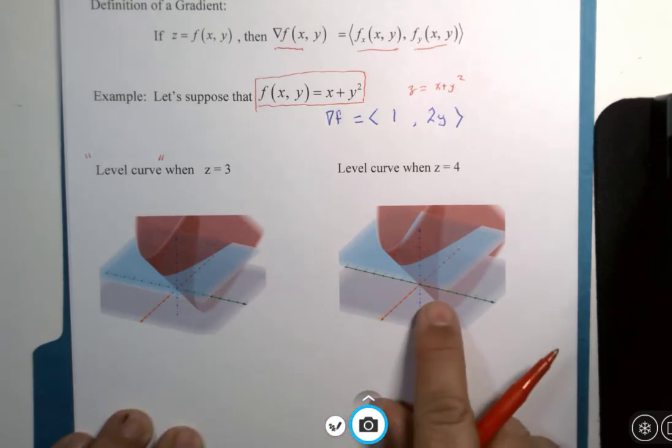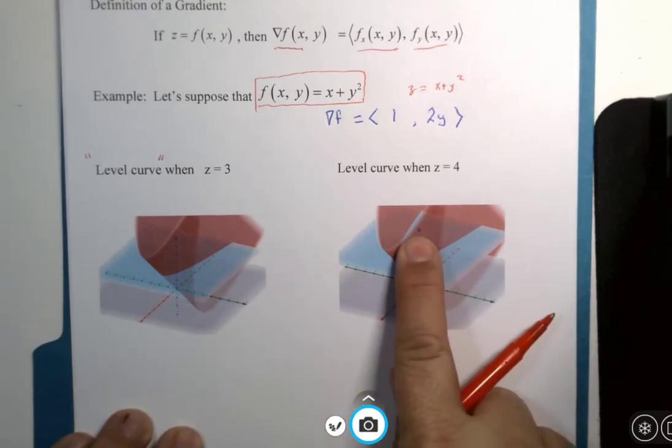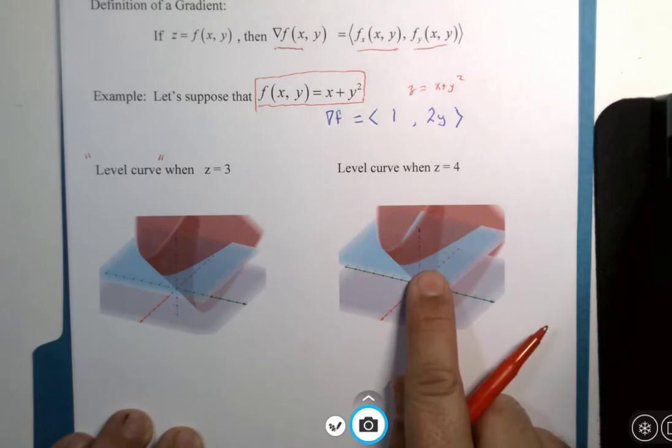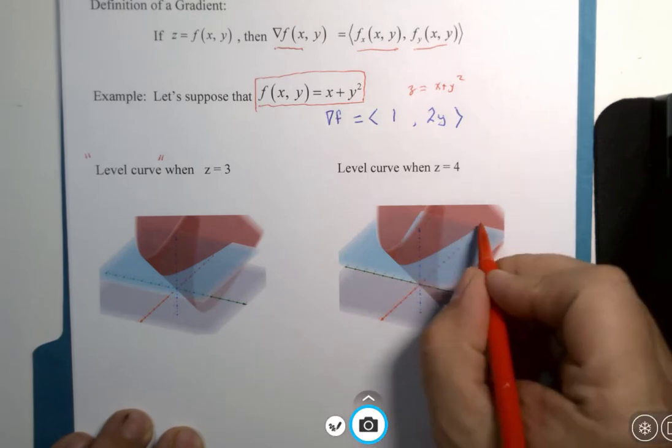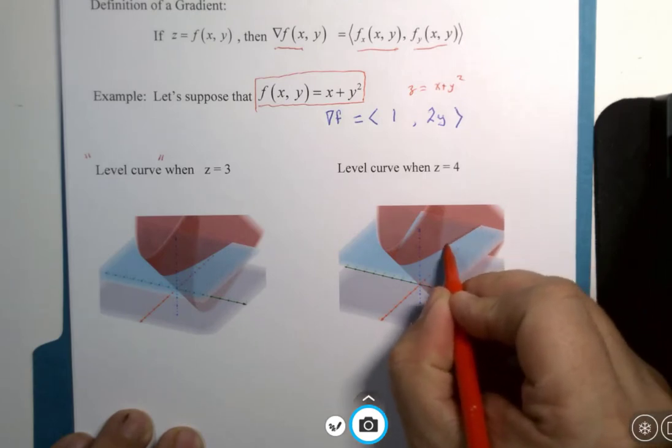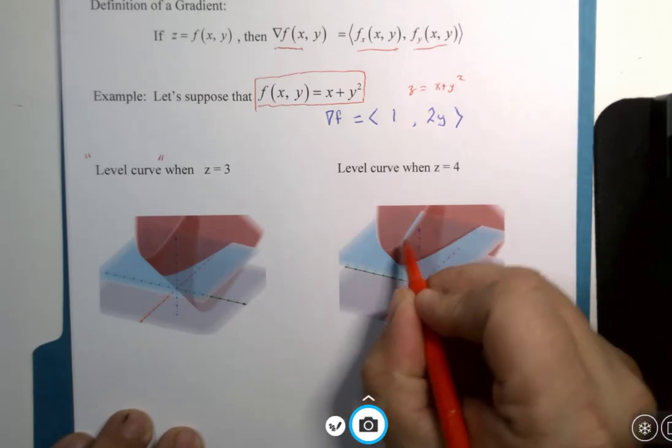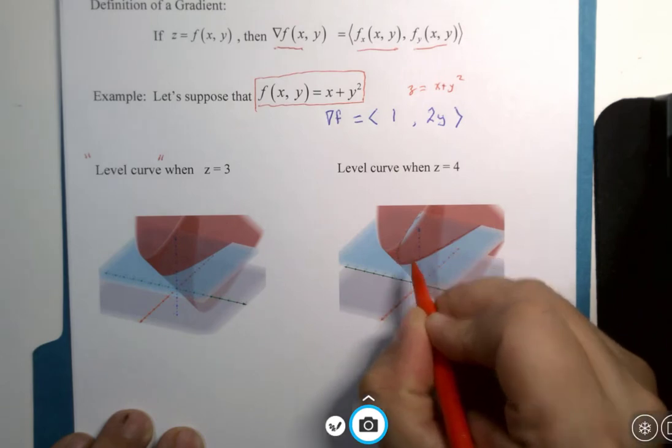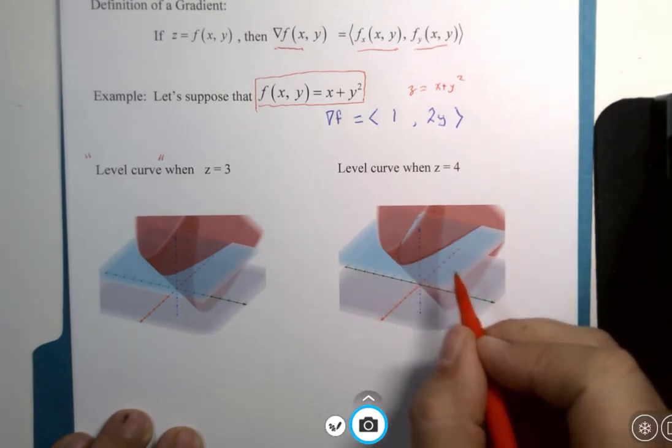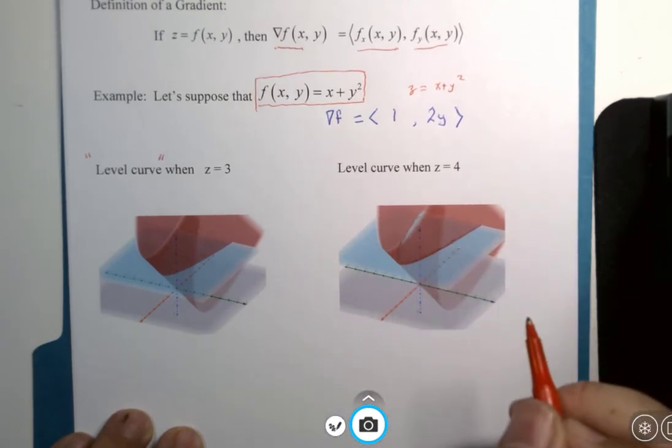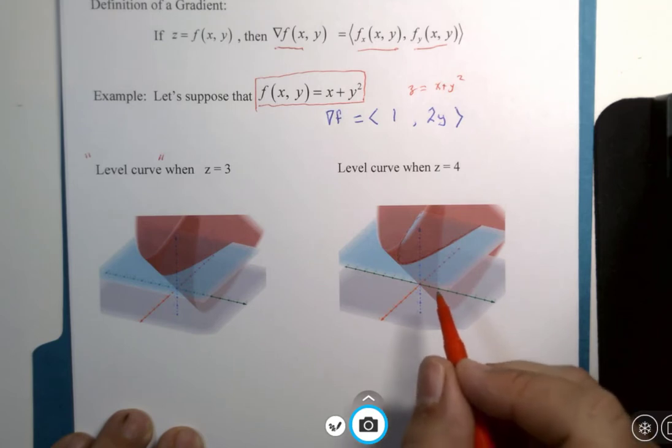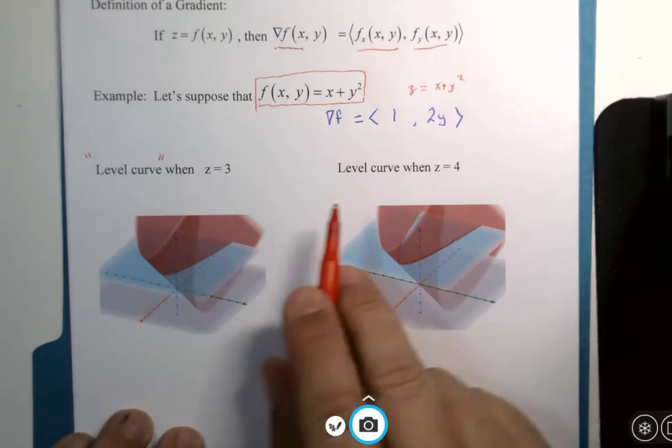And then this is the same shape, the same surface, but this is where the level curve would be. If I traced along here, that would be the level curve, just the curve. It looks like a parabola when the level or z equals four. So it turns out gradient has something to do with these level curves.